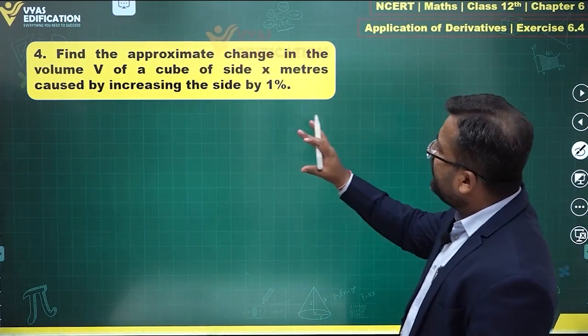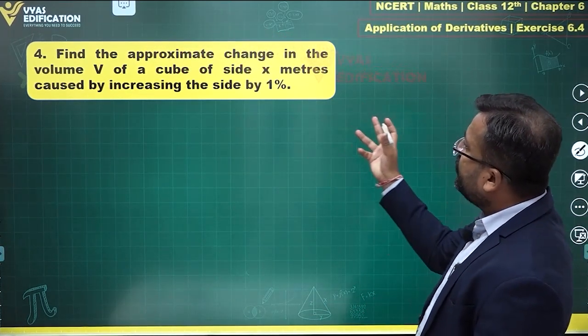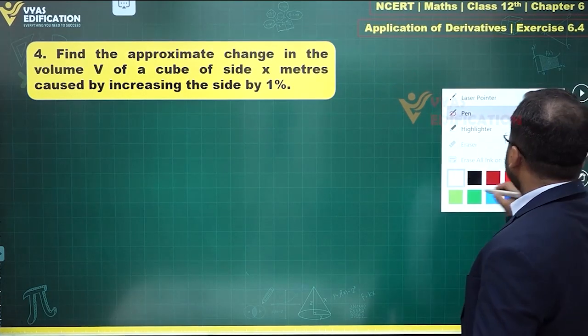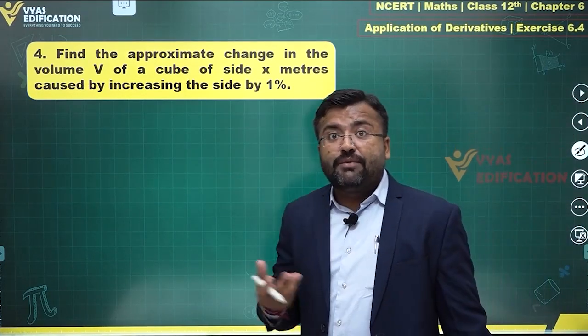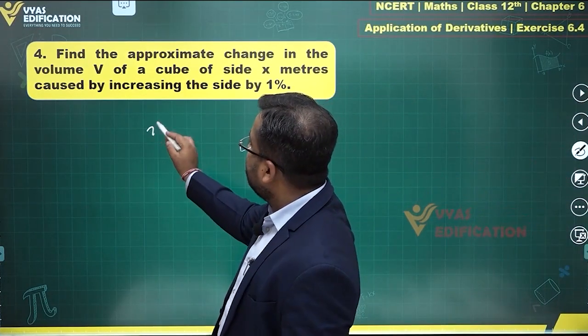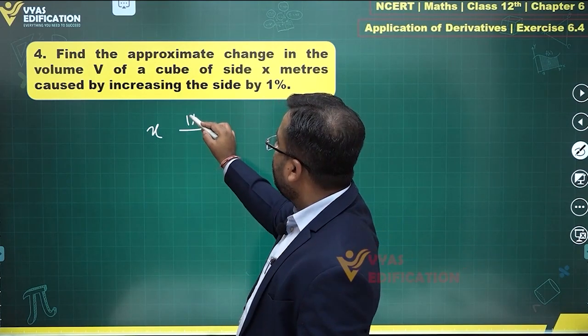The fourth question says that we are supposed to find the approximate change in the volume V of a cube of side x meters caused by increasing the side by 1%.